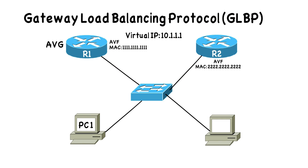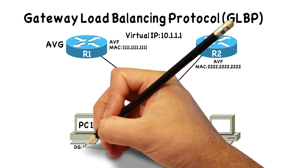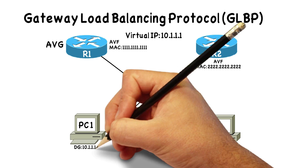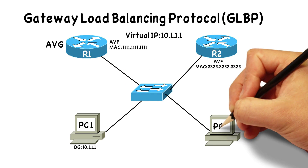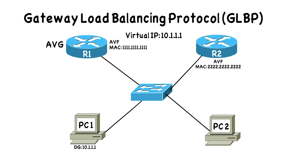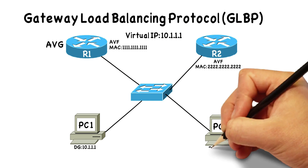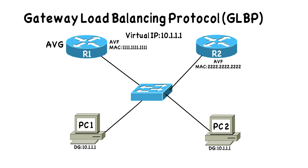We can have as many as four Active Virtual Forwarders within a group. We can have some other virtual forwarders that are not currently active — they're standing by. But we can have as many as four active virtual forwarders simultaneously able to send traffic off of a subnet.